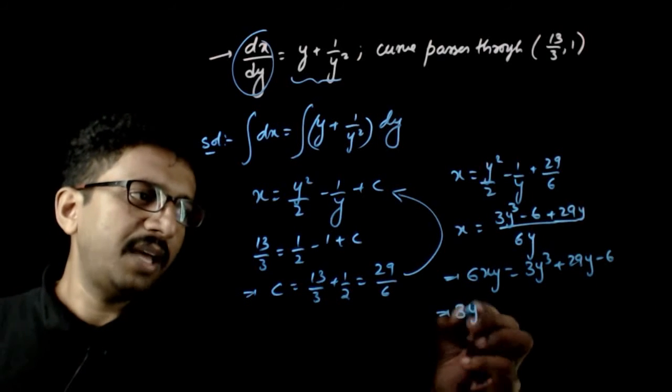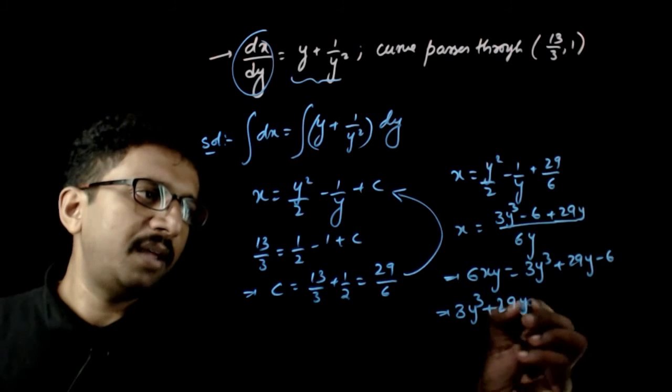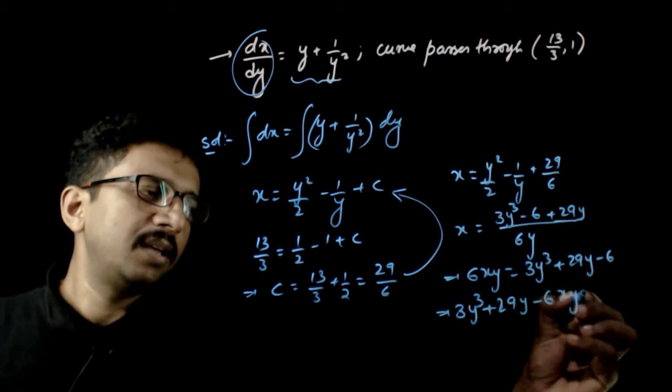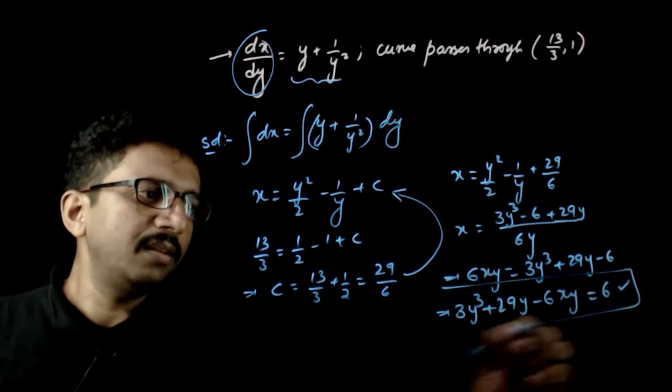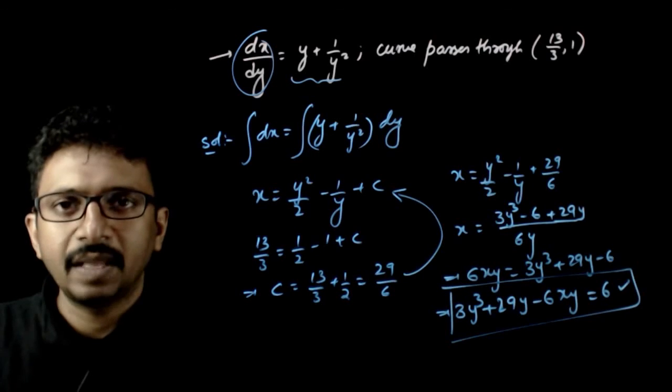This implies 3y cube plus 29y minus 6xy is equal to 6. This will be the particular solution for this question. Thank you.